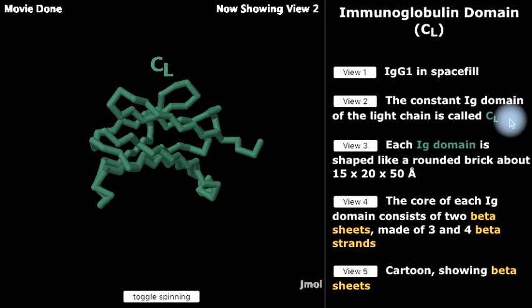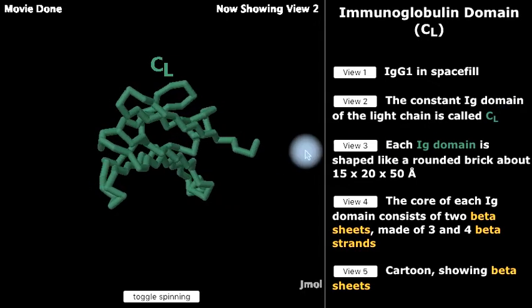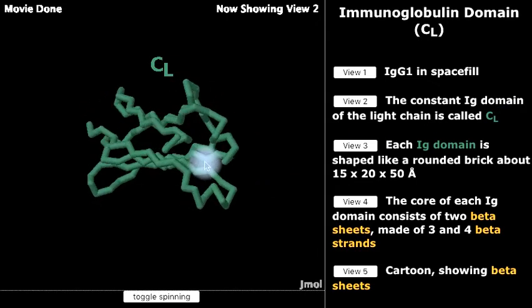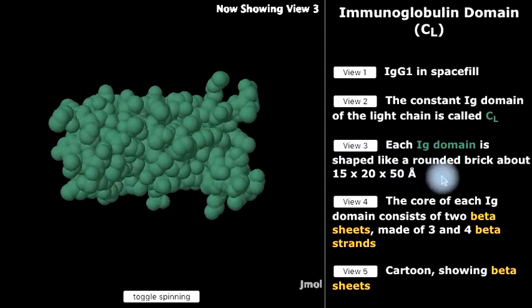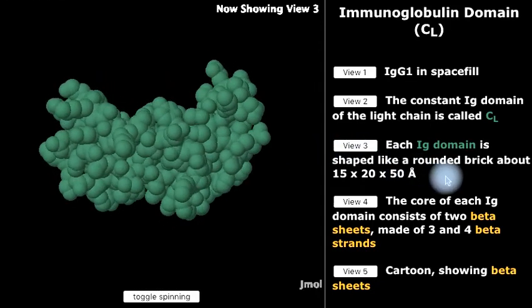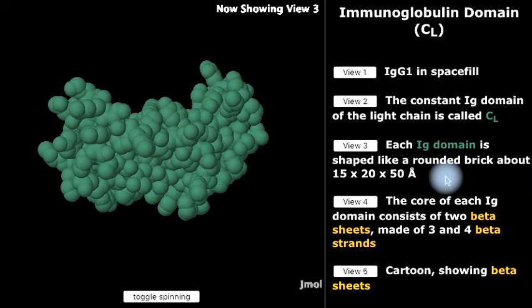This is the backbone trace of one immunoglobulin domain. Now we see this one immunoglobulin domain as a solid object.